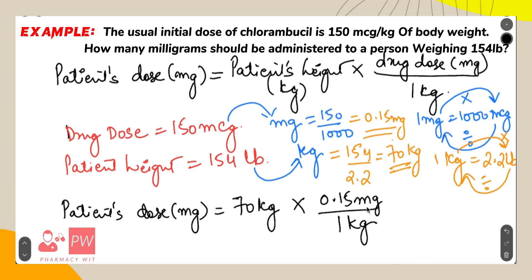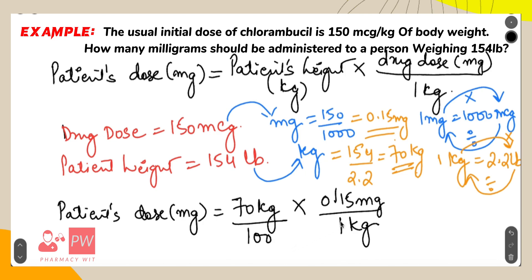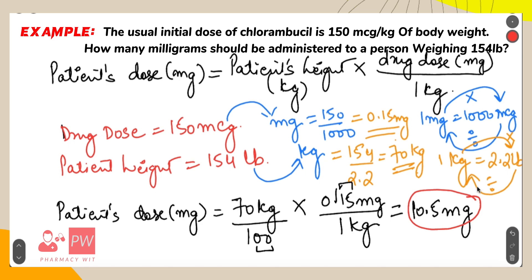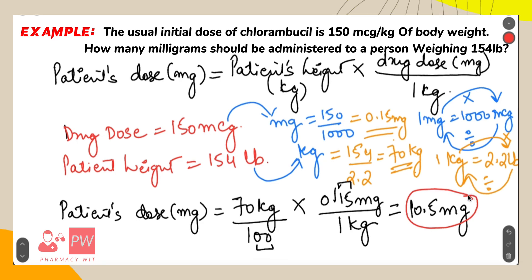Solving this equation — removing the decimal from the numerator brings 100 into the denominator — you will get 10.5 mg. So 10.5 mg of chlorambucil should be administered to a person weighing about 154 pounds.